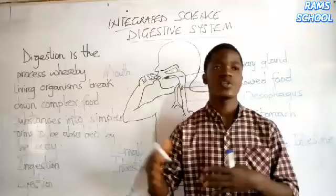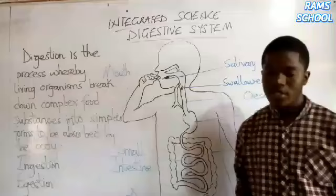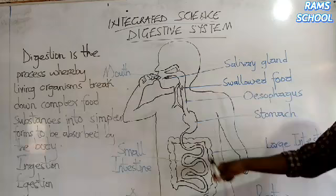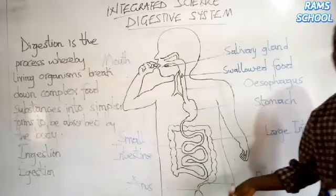For our basic level, we are going to discuss seven parts of the digestive system: the mouth, the esophagus, the stomach, the small intestines, the large intestines, the rectum, and the anus. We are going to take a brief discussion about each of the parts.